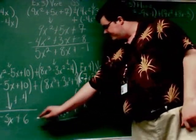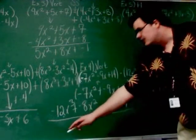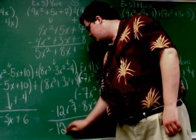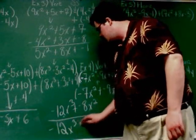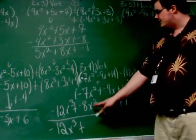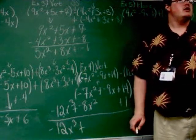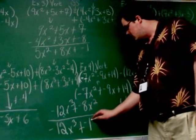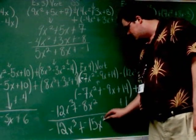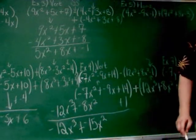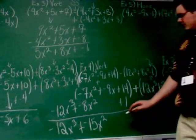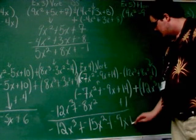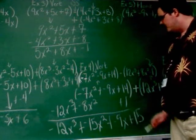Okay, now we add up. So negative 12x cubed, again, it's hanging out there all by itself. Negative 7x squared and negative 8x squared. If you add negative 7 and negative 8, you get negative 15. Negative 9x, it's just going to come straight down, nothing else you can do with that. And 14 and 1, of course, make 15.